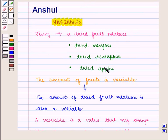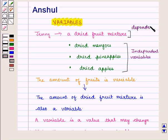In the above example, the amount of dried fruit mixture depends on the amount of fruits added. So amount of dried mangoes, dried pineapples and dried apples are independent variables. And the amount of dried fruit mixture prepared is the dependent variable. Variables help in broadening the relationship between two quantities.